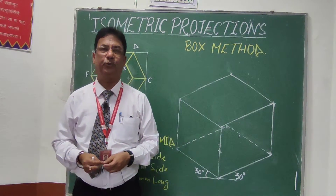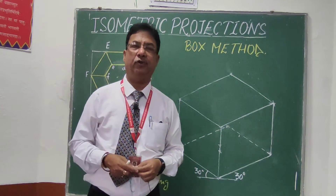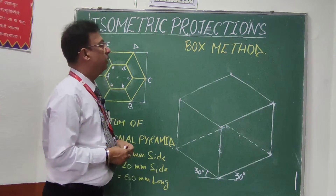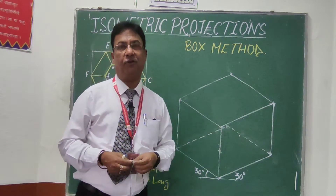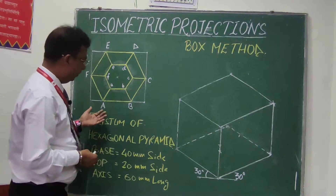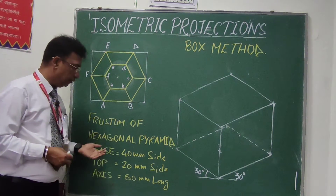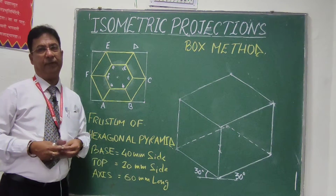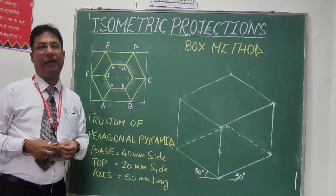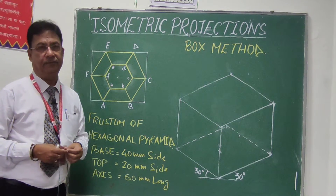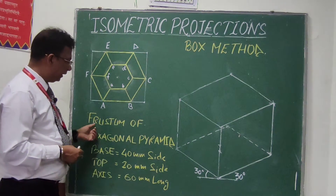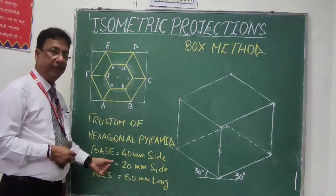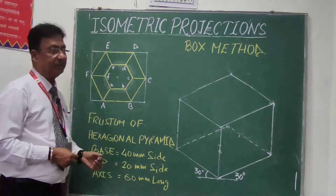Hello students, today I am here with another lecture on isometric projection. This time I am going to explain the method known as the box method. The problem we have taken is a frustum of a hexagonal pyramid. As you know, a frustum is formed when a pyramid is cut by a plane parallel to the base, and the lower part is known as the frustum. The lower base will be 40mm side, top base will be 20mm side, and the axis will be 60mm long.